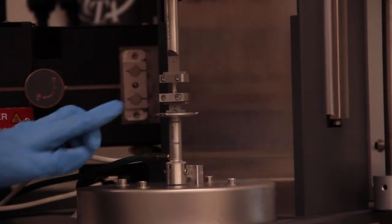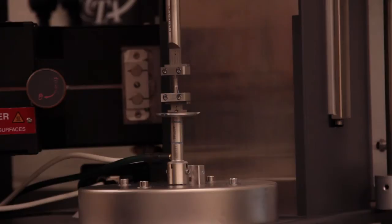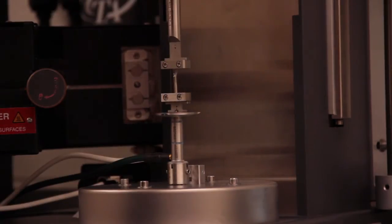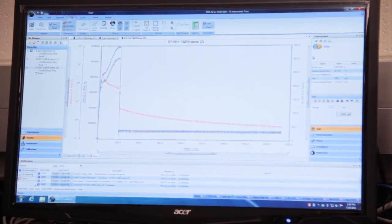The hydrogel is clamped in here, and the instrument is pulling it vertically. It records the percent strain and plots the stress. We can see that the material can stretch to 250 percent strain.